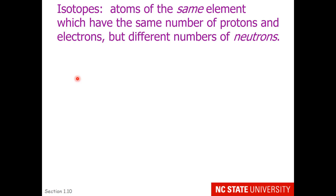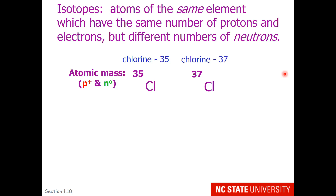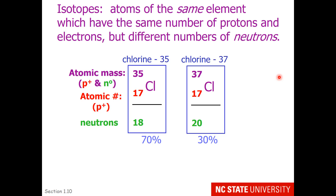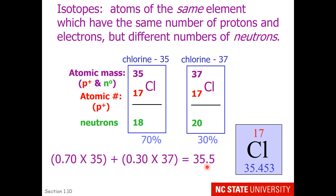A vocabulary word I just used is isotopes. Isotopes are atoms of the same element which have the same number of protons and electrons, but different numbers of neutrons. The classic example students are usually given is chlorine. The two major isotopes of chlorine have masses of 35 and 37. Both types of chlorine have 17 protons, so if you take the difference between the atomic number and the atomic mass, you'll find that 70% of chlorines have 18 neutrons, and 30% have 20 neutrons. Taking the weighted average of these masses, you wind up with close to 35.5, or more precisely, 35.453 grams per mole.